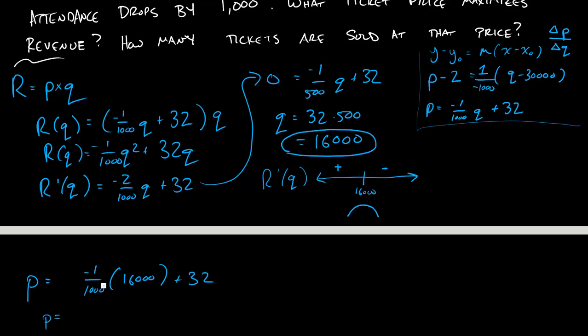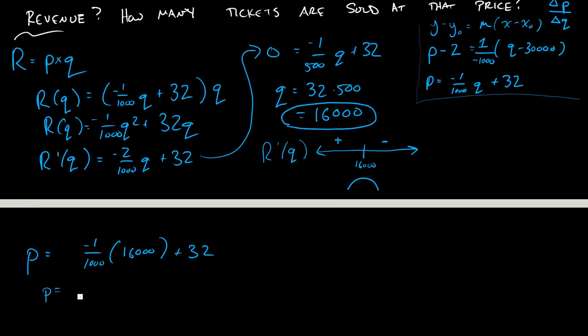Or that the price will be, if you plug this into your calculator, you will get $16 per ticket. So not very high, but the Cubs aren't very good. So that's what they have to charge to maximize their revenue for each game.